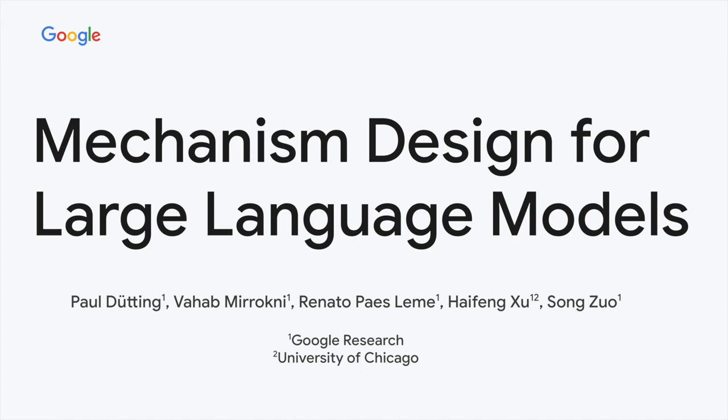In this work, we design mechanisms to enable collaborative generation among large language model agents. We introduce a token auction model for this purpose.